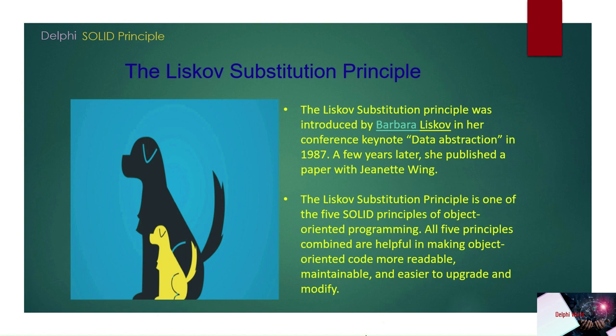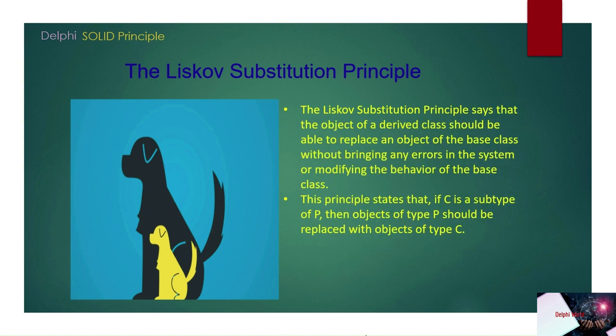The Liskov Substitution Principle is one of the five SOLID principles of object-oriented programming. All five principles combined are helpful in making object-oriented code more readable, maintainable, and easier to upgrade and modify. The principle states that objects of a derived class — meaning the child class — should be able to replace an object of the base class, which is the parent class.